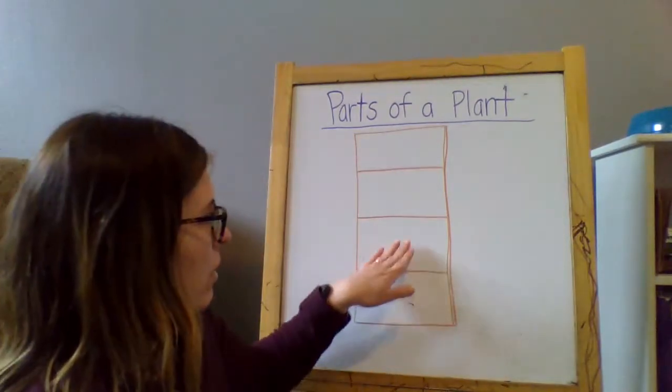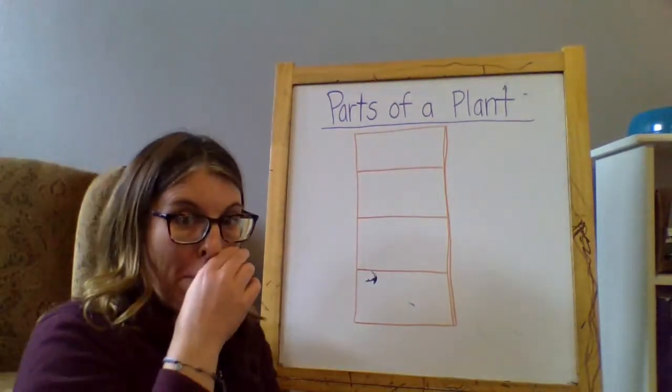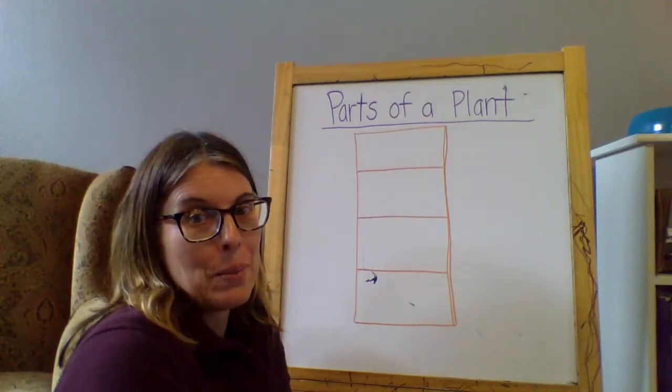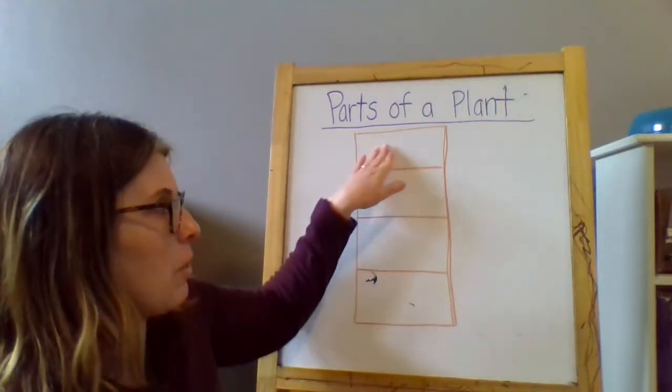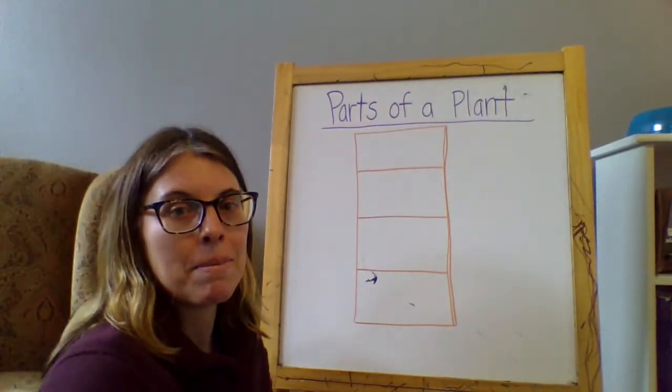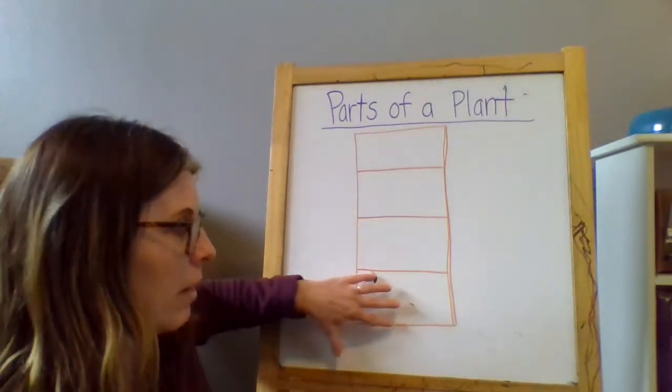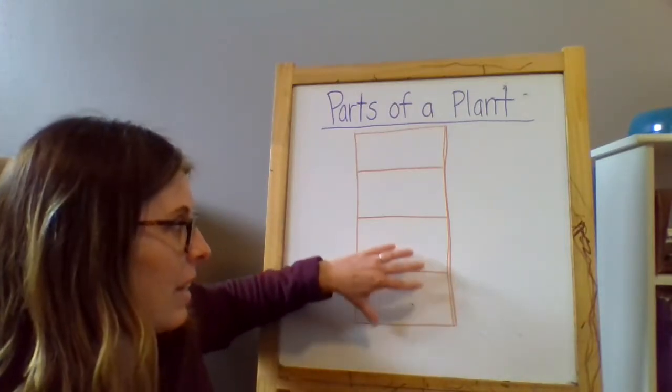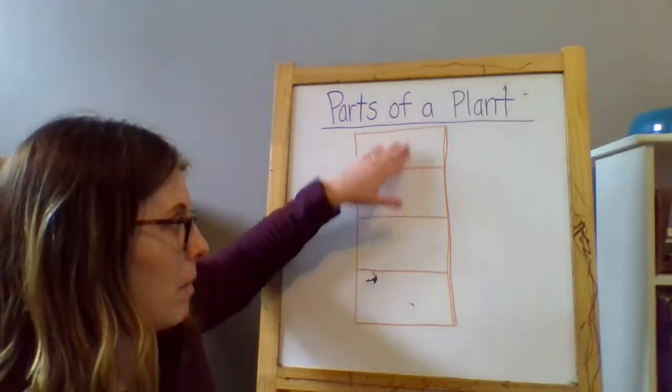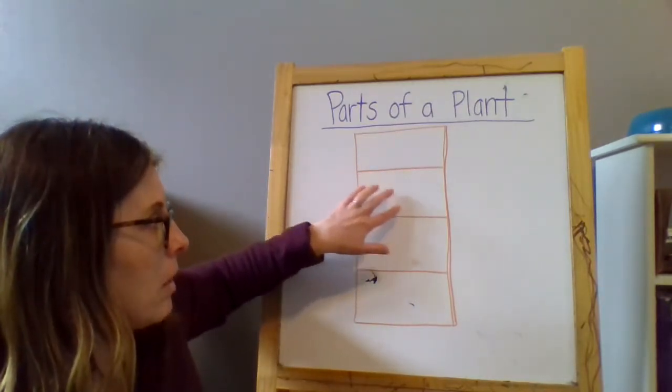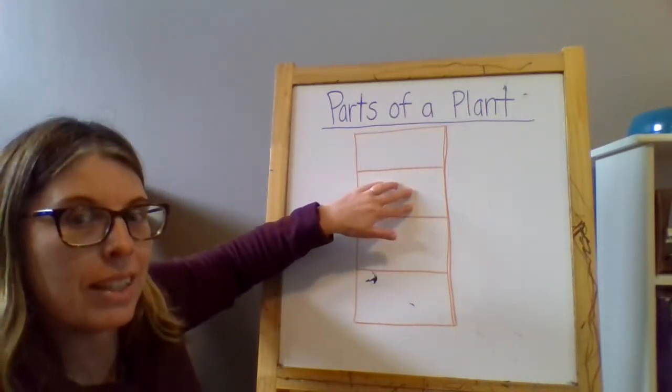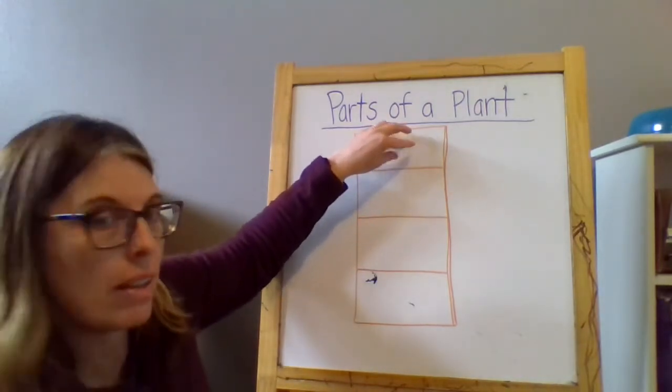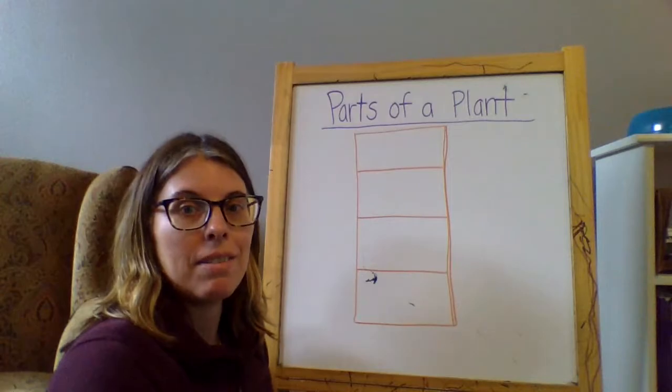So before we get started, there's room for four parts here. Can you tell me four parts of a plant that we could be focusing on as we draw our plant? What would go at the bottom? What's down here? Roots. Goes up. Stem. These are the green parts that come out. Leaves. And the pretty colorful part that's often at the top. Flower.